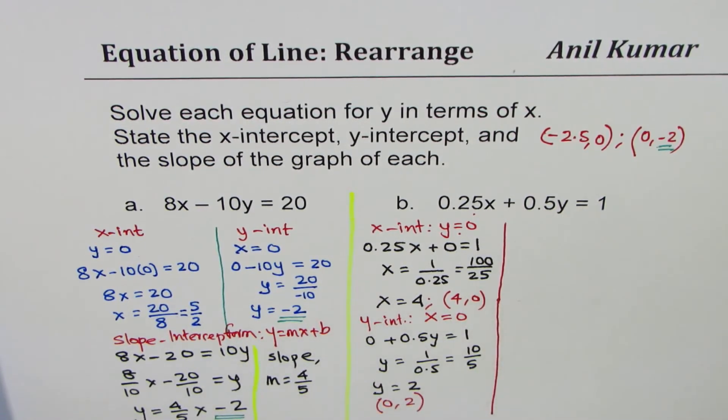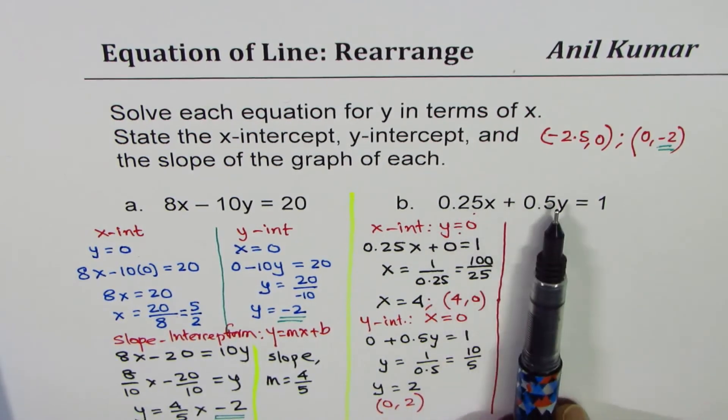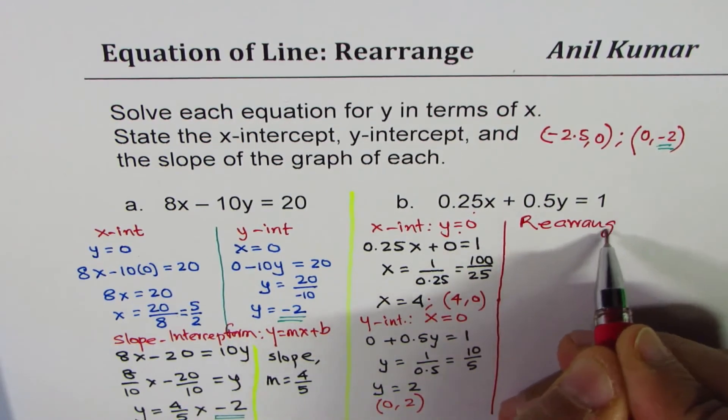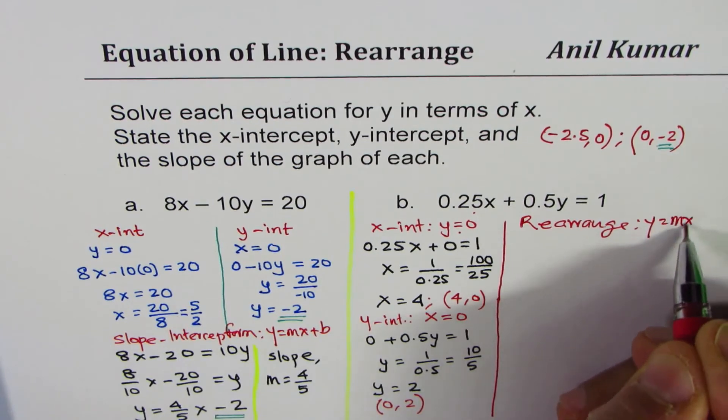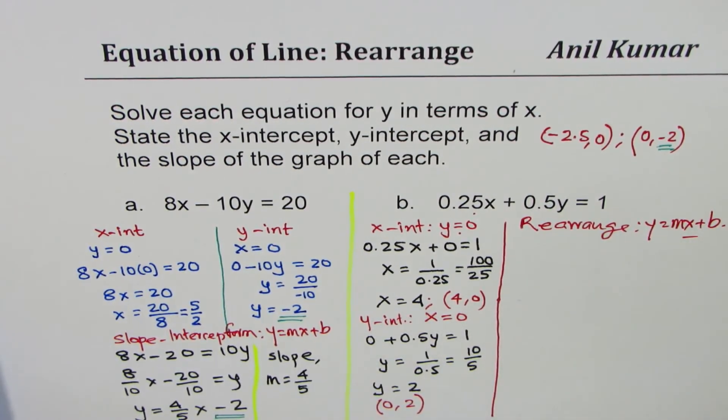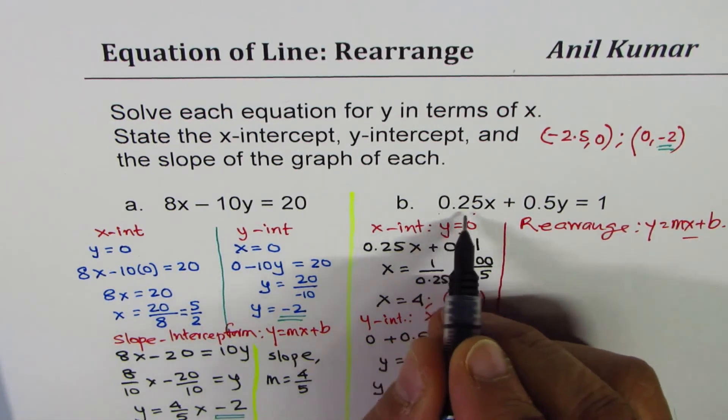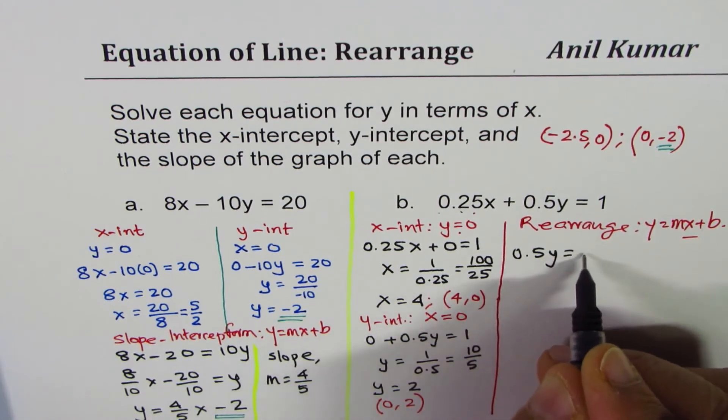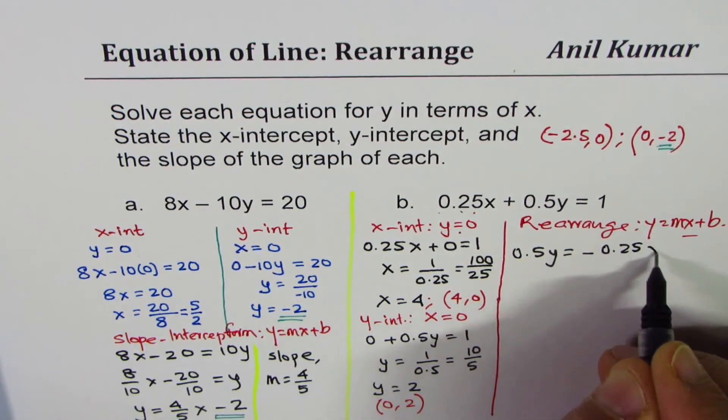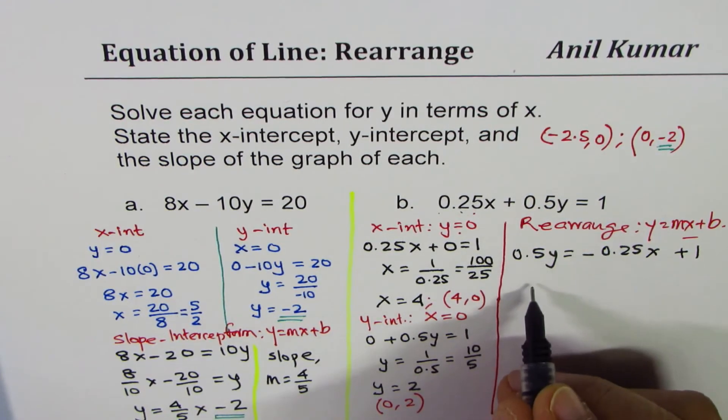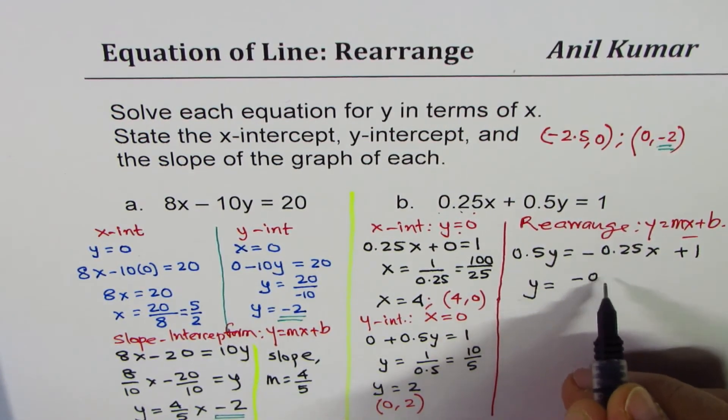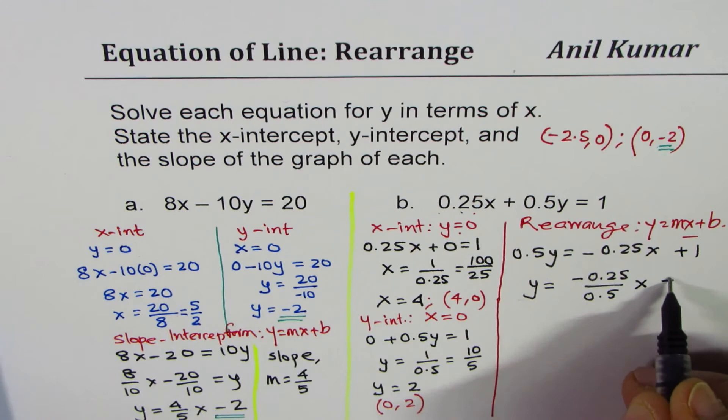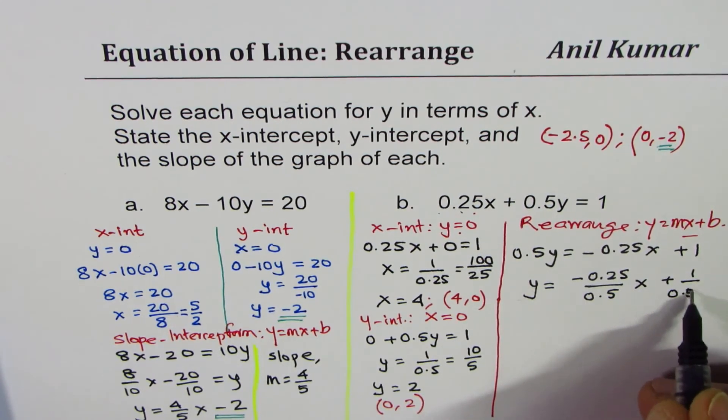So we have both x and y-intercepts. And now we'll rearrange to write it in slope-intercept form. So let this be rearrange part. y equals mx plus b form, slope-intercept form. So we'll basically isolate y. Taking 0.25x to the right will give us 0.5y equals minus 0.25x plus 1. Now we'll divide by 0.5. So y equals minus 0.25 divided by 0.5x plus 1 divided by 0.5.